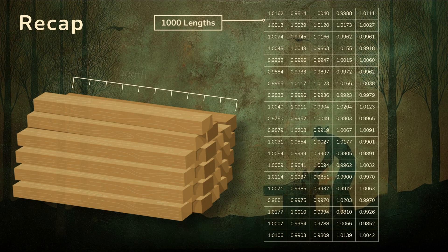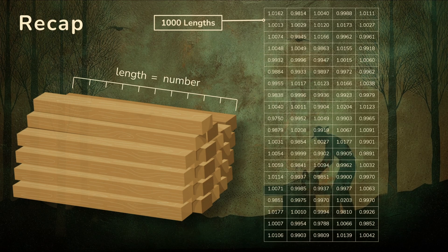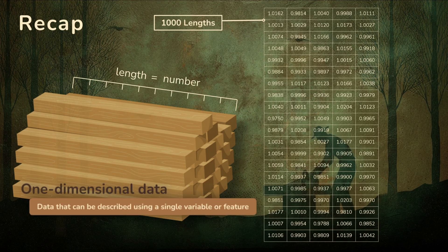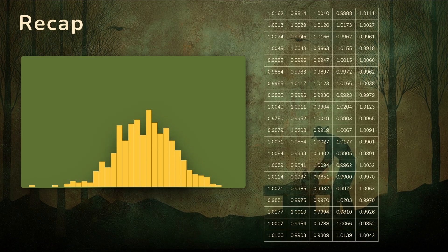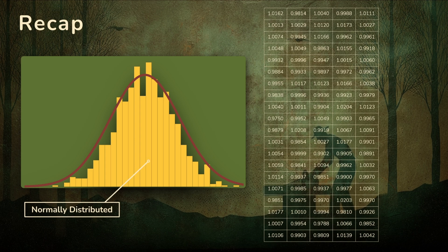Here, the measurement, the board's length, is a single number. That makes it one-dimensional data. If we plot the histogram of these lengths, it rises into a familiar shape reminiscent of the bell curve. This suggests that our data is normally distributed.